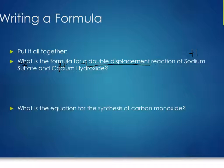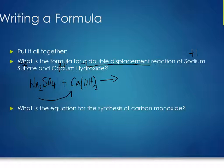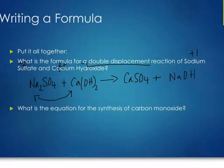For the double displacement products: cations swap. Calcium pairs with sulfate — plus two and minus two — so just one of each: CaSO₄. Sodium pairs with hydroxide — plus one and minus one — so NaOH. Now balance: left side has two sodiums, one sulfate, one calcium, two hydroxides; right side has one sodium in NaOH. Put a coefficient of two in front of NaOH and everything balances: Na₂SO₄ + Ca(OH)₂ → CaSO₄ + 2NaOH.